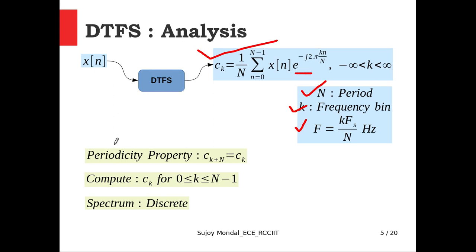One important property is the periodicity of DTFS coefficients: c_{k+N} equals c_k, meaning the Fourier Series coefficients form a periodic sequence with the same period as the signal. While the analysis equation requires computing c_k for all integer values from minus infinity to plus infinity, because of this periodicity we only need to compute c_k within the fundamental range from 0 to N minus 1. The DTFS spectrum is discrete, since c_k values are associated with integer k values.